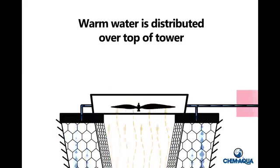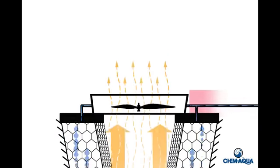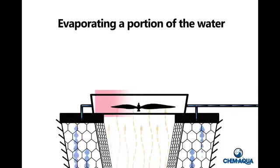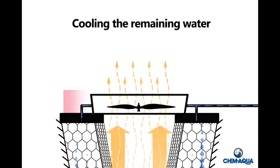Warm water is distributed over the top of the tower, where air moves past the warm water, evaporating a portion of the water, cooling the remaining water.